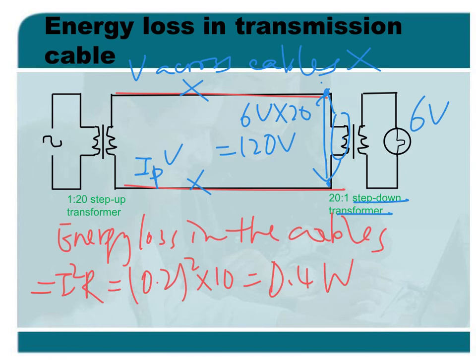But we cannot find the voltage across the cable easily. Actually, it is very small. So the voltage you find, 120V, is not the voltage across the cable. We cannot use this voltage to calculate the energy loss.